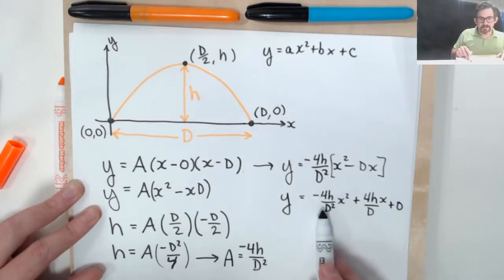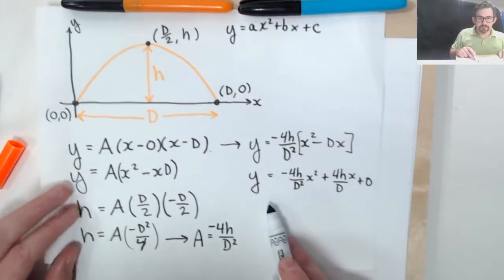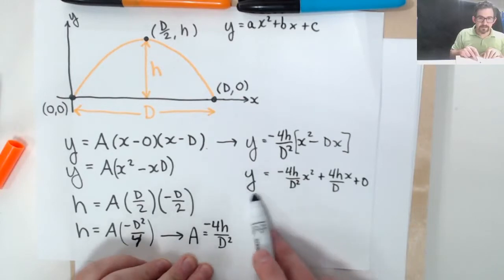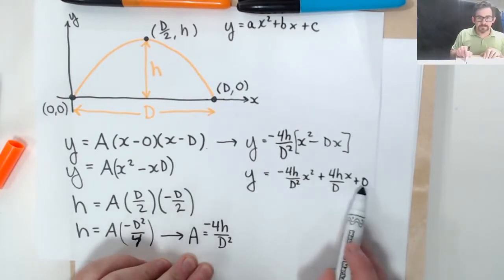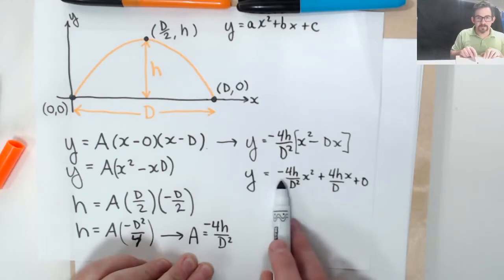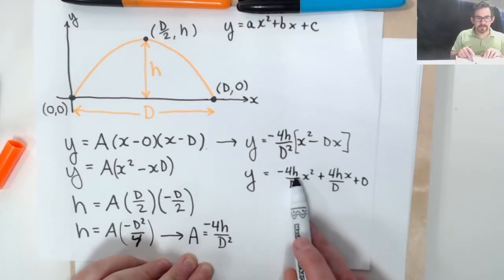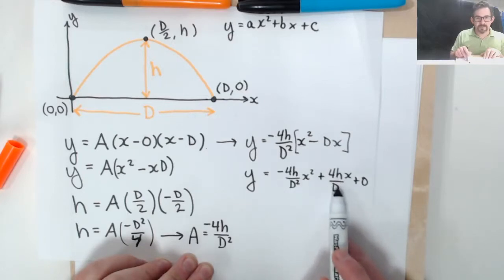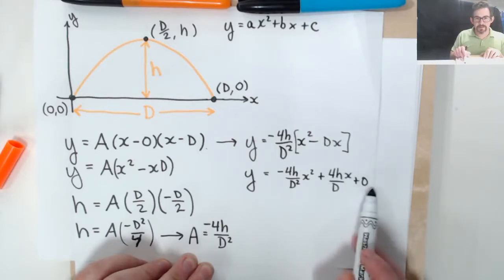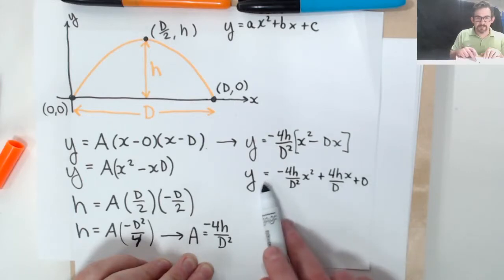So let's check that these have the right dimension. I know that if this is a height, the height y, each of these terms needs to have a value of length. So here I have x squared and d squared. Those are going to cancel because d is a length. And I'm left with h, so that gives me just a value of length. Here I have two factors of length, h and x in the numerator divided by one factor. That also checks out and gives me a length. And zero here, that could be a length. Makes sense. So this checks out.